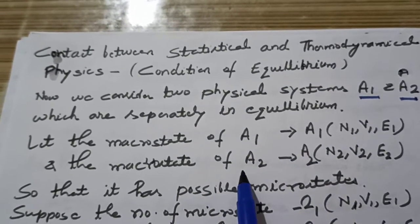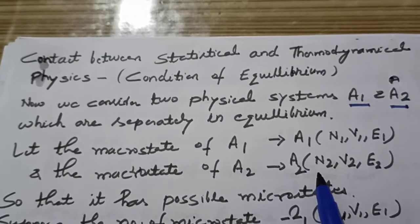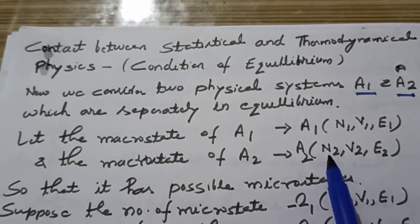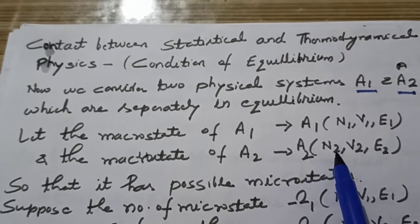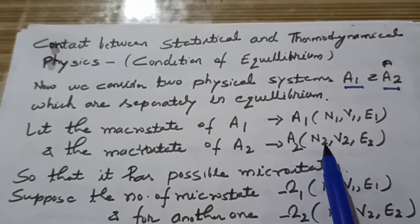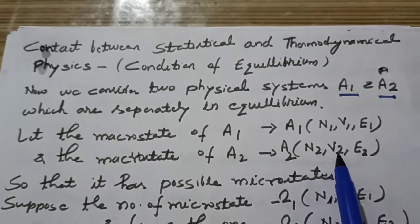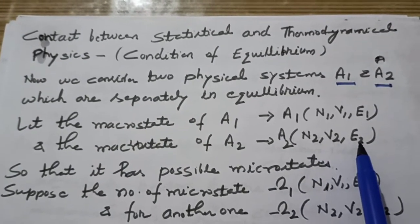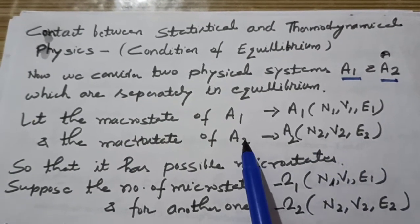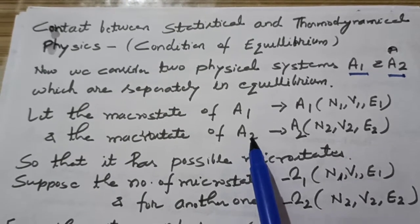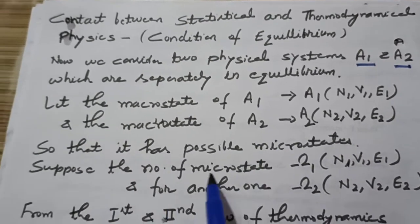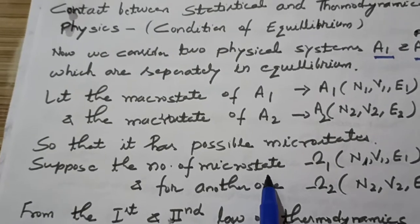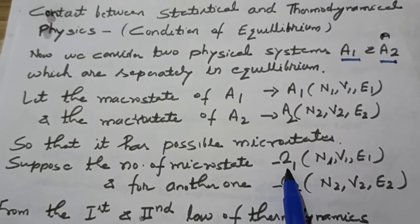The macro state of A2 is similarly assigned by N2, V2, E2. Here N2 is the number of particles for system A2, V2 is the volume, and E2 is the corresponding energy for system A2. Each system has possible microstates.